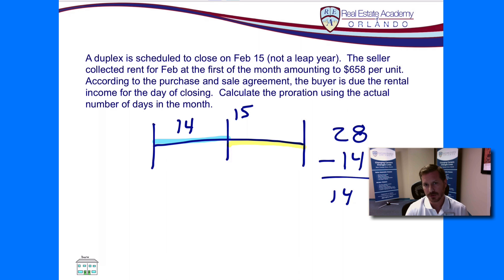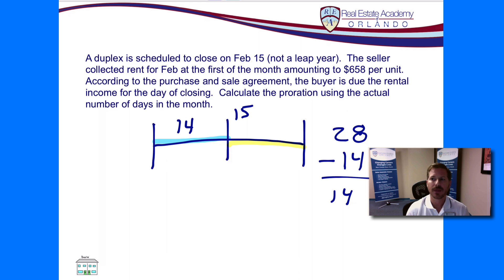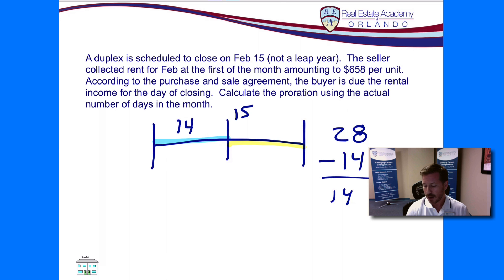Always be careful when doing prorations and never guess. One problem I see with a lot of students is that when they see the 15th of the month, they automatically think it's the middle of the month and want to split it 50/50 between buyer and seller. In a 28-day month that actually works out — it is 50/50. However, if this were a 30-day or 31-day month, the numbers would be different. So make sure you actually calculate the number of days before you continue with your proration.